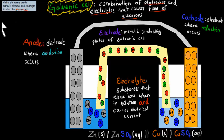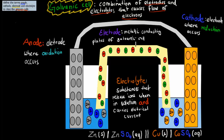Now we'll cover the next term, which was the anode. Before we go into the anode, I'll cover the word electrode. The electrode was the metallic conducting plates of galvanic cells. In this case, we've got two conducting plates — the zinc and the copper electrodes, or the anode and the cathode. These two plates allow electricity to flow; they're the conducting ones. Without these two plates, nothing would happen.